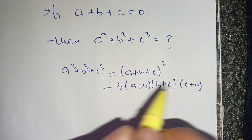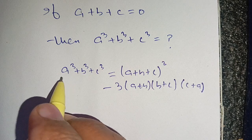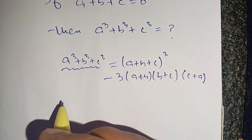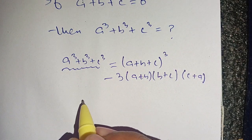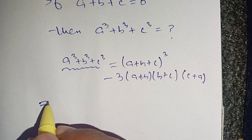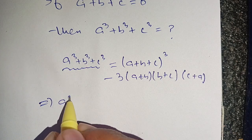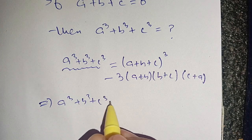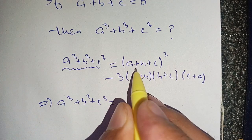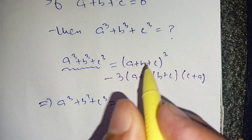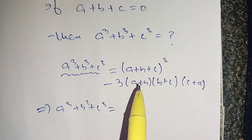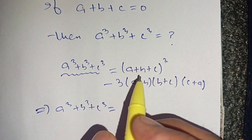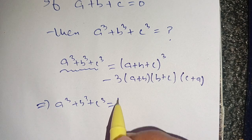We have to find the value of a cube plus b cube plus c cube. On substituting the value, we get a cube plus b cube plus c cube is equal to a plus b plus c — and we know that a plus b plus c is equal to 0, as given.